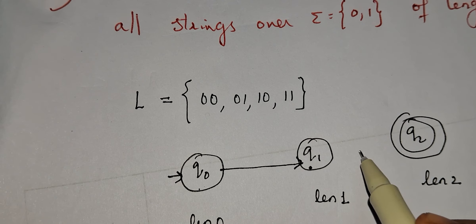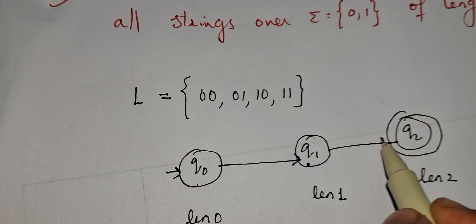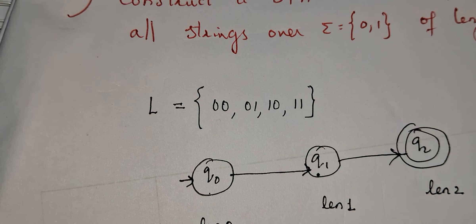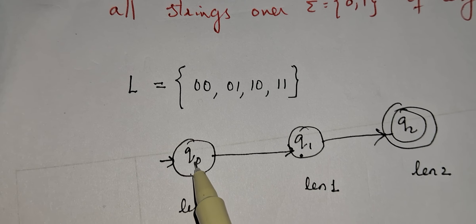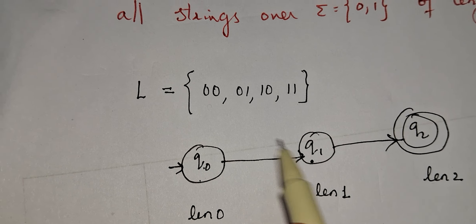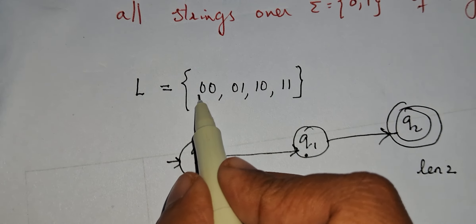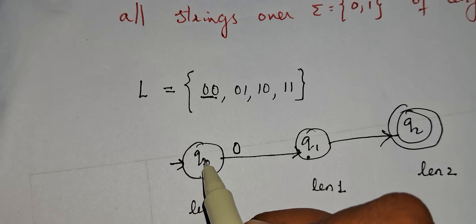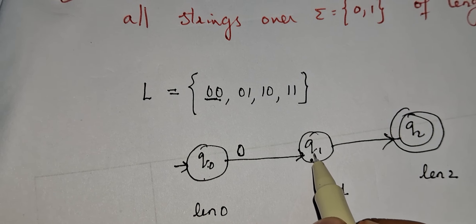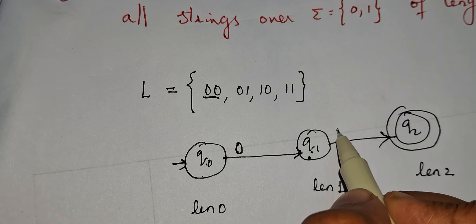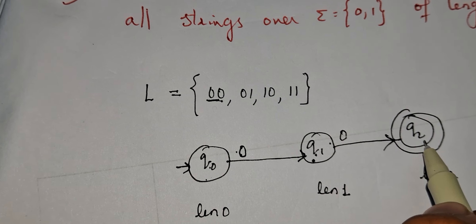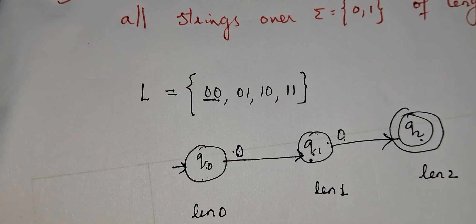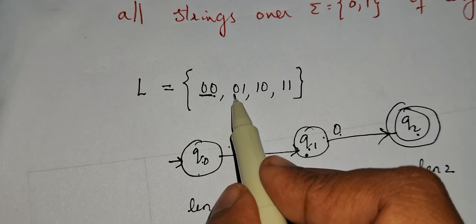To move from one state to another, you need to show the transition on a particular input symbol. To accept 00: q0 on 0 goes to q1, and from q1 on 0 goes to q2. We reach the final state, so 00 is accepted by the automata.